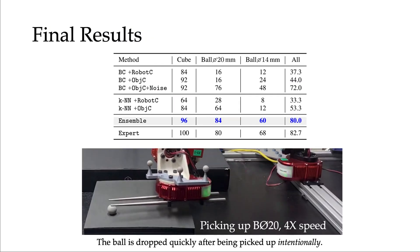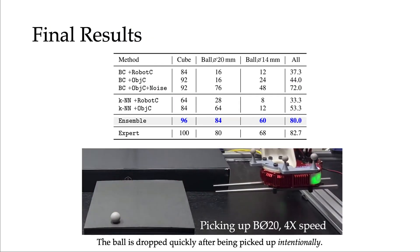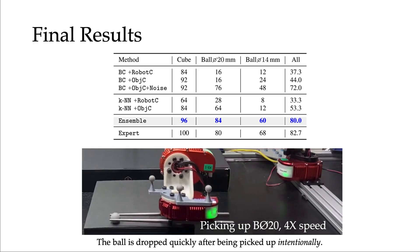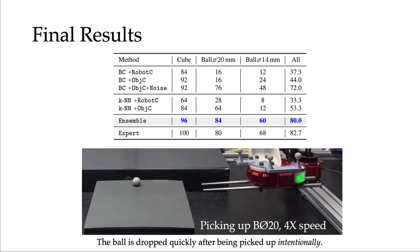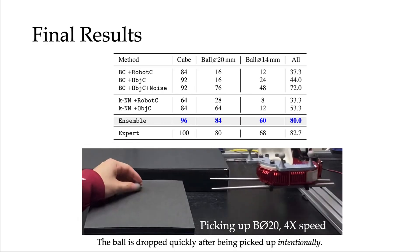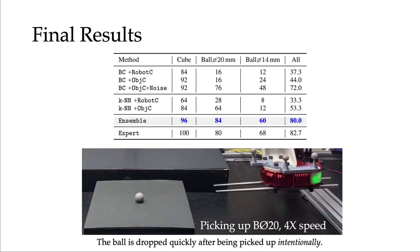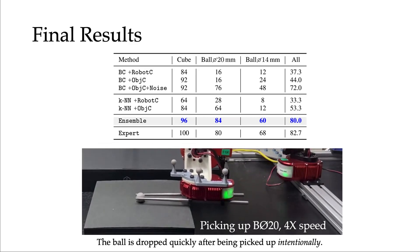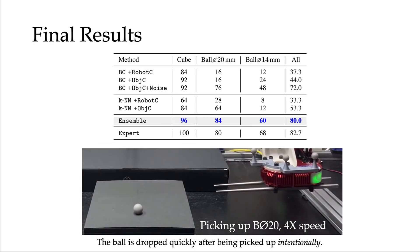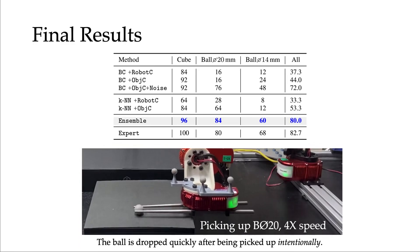Finally, this simple ensemble model works the best. It achieved comparable performance to human experts. Here we show the video of our agent picking up the medium-sized ball. The success rate of the agent shown here is about 84%. To speed up the demonstration, the robot drops the ball after picking it up. It's actually intentional to drop it fast.